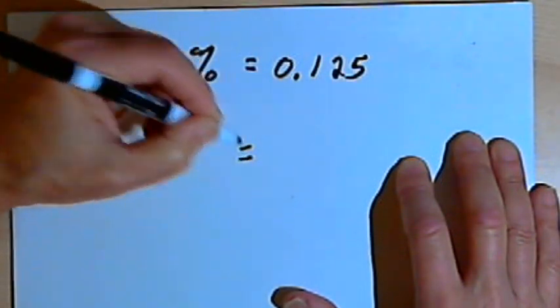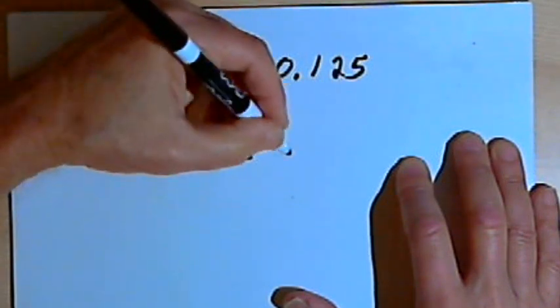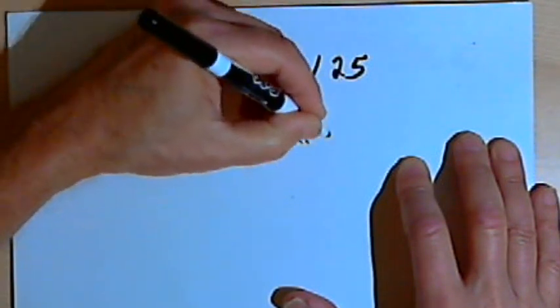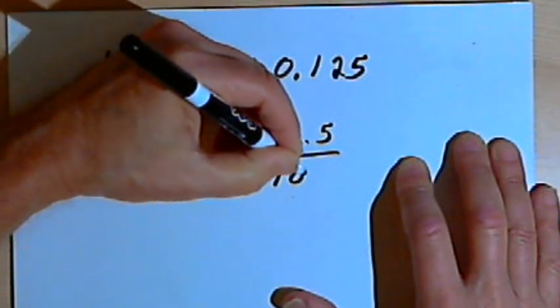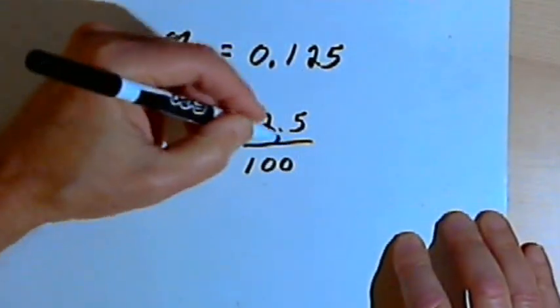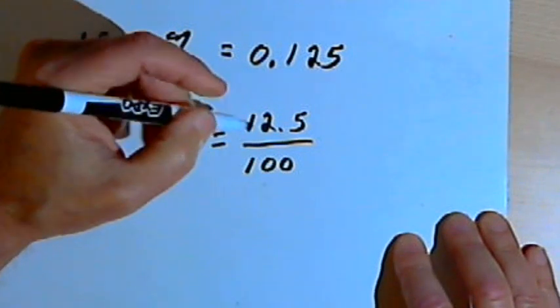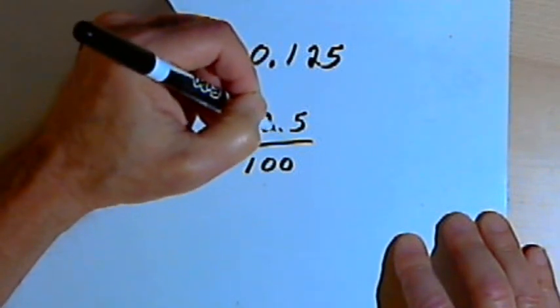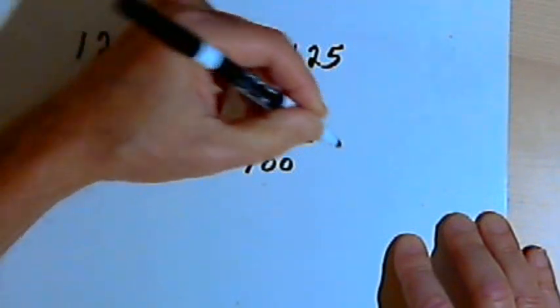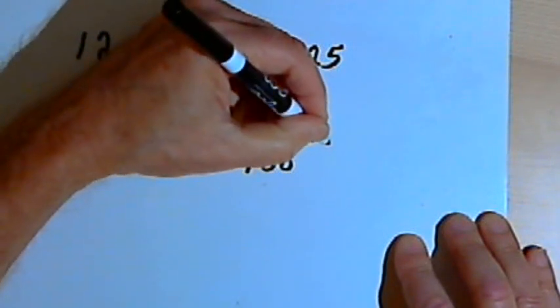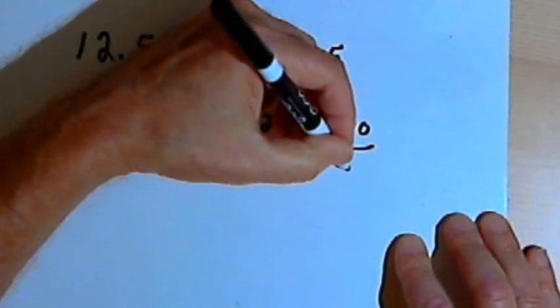If I want to turn that into a fraction, I'd take the number, the 12.5, without the percent sign, and put it over 100. So I've got 12.5 over 100. Now I don't want to leave that with a decimal as part of the fraction. So I could multiply both the numerator and the denominator by 10.